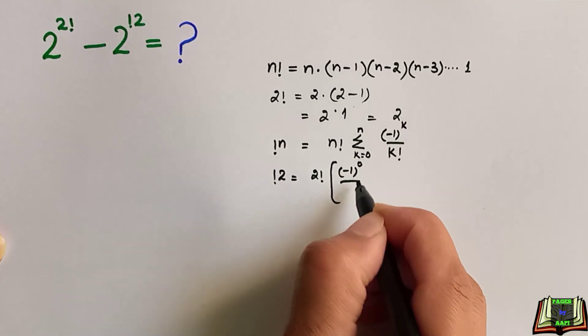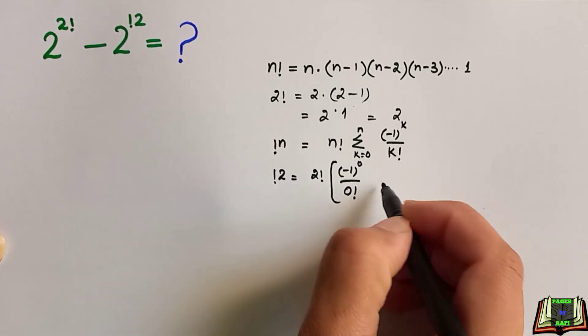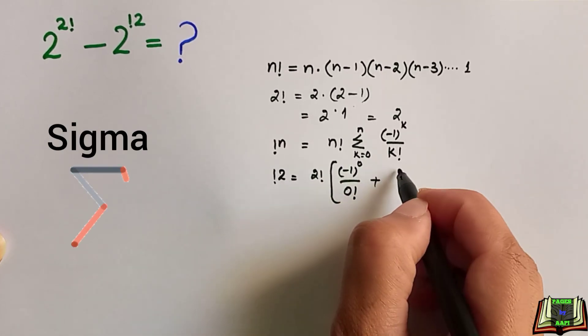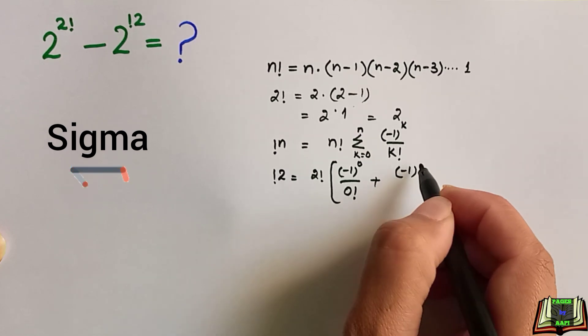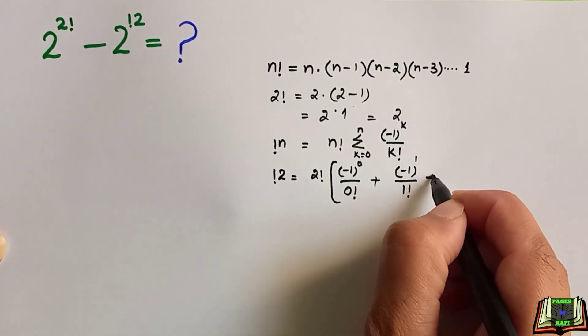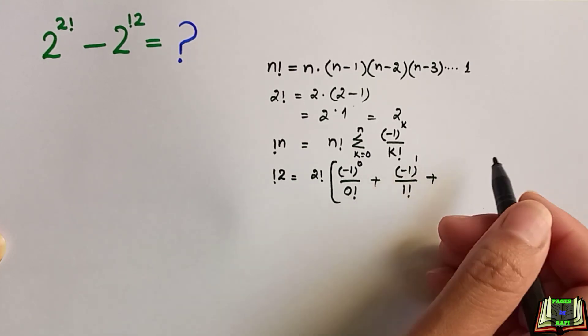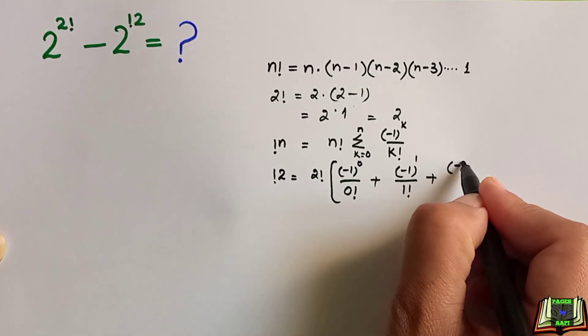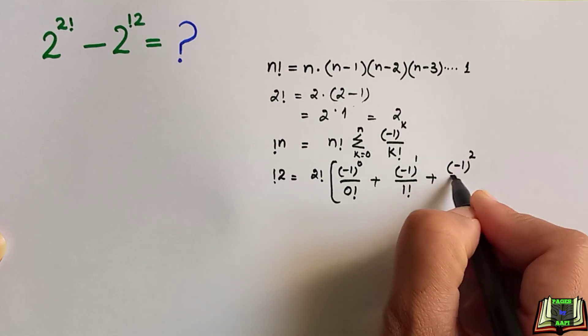So, (-1)^0 over 0 factorial, and summation means we have to add (-1)^1 over 1 factorial plus (-1)^2 over 2 factorial.